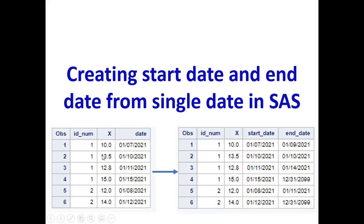Here I have a dataset on the left side. This dataset has three variables: id_num, x, and date. For id_num, we have two distinct values. The first is 1 and 2. I'll explain through the context of id_num as 1. When id_num is 1, the value of x is 10 and the date is 01/07/2021.